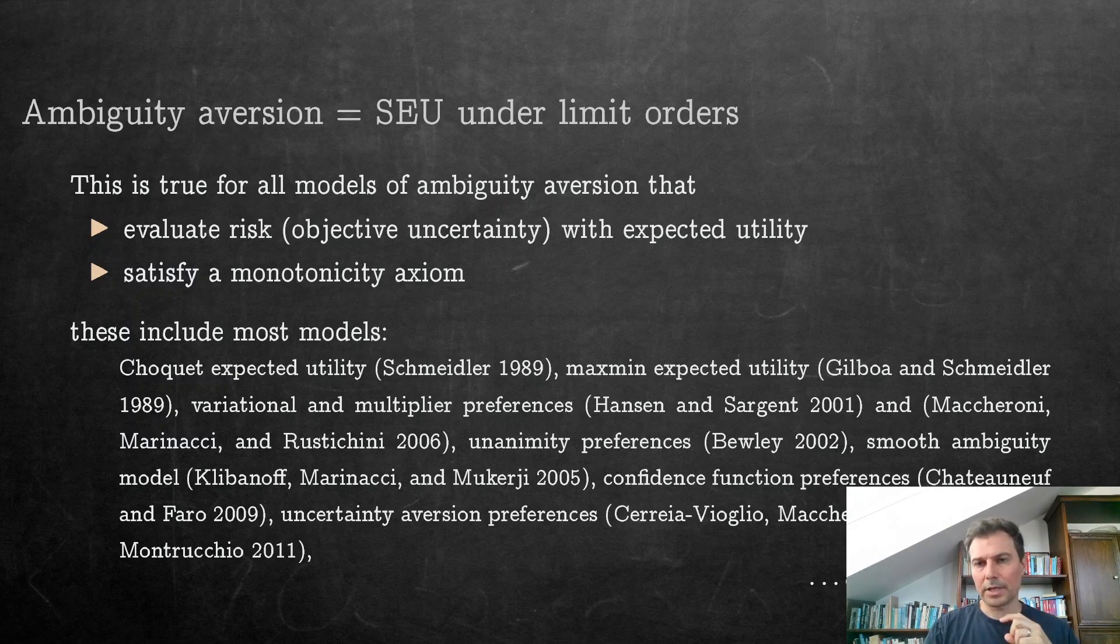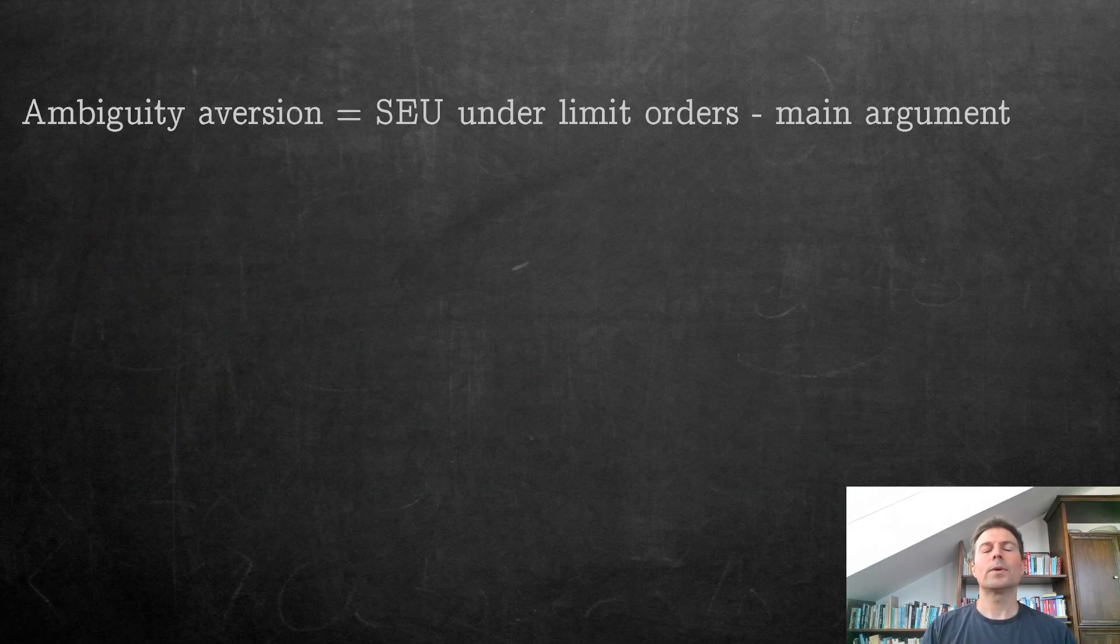This includes most models that have been used in finance and most models that have been developed at all. In particular, the very popular max-min expected utility model by Gilboa and Schmeidler and the smooth ambiguity model by Klibanoff, Marinacci and Mukerji.